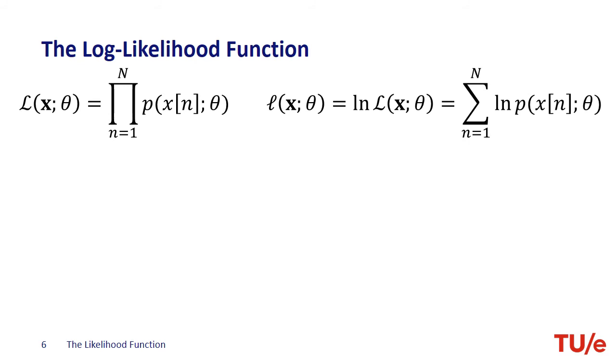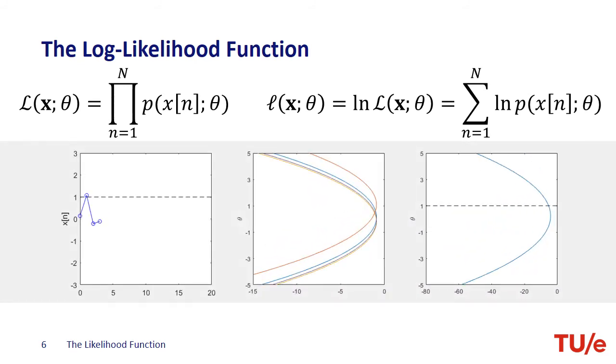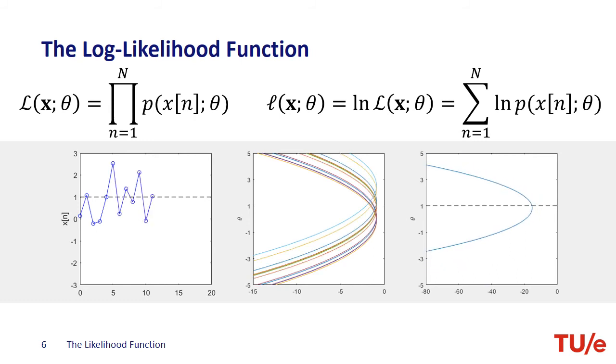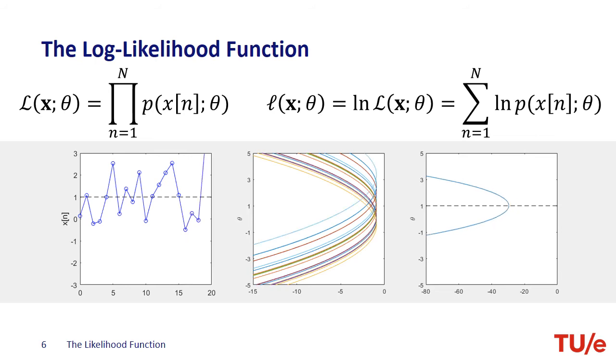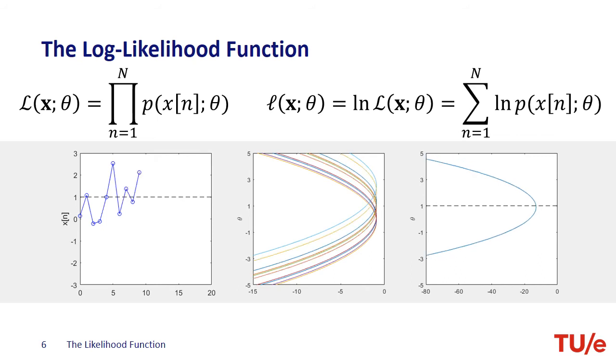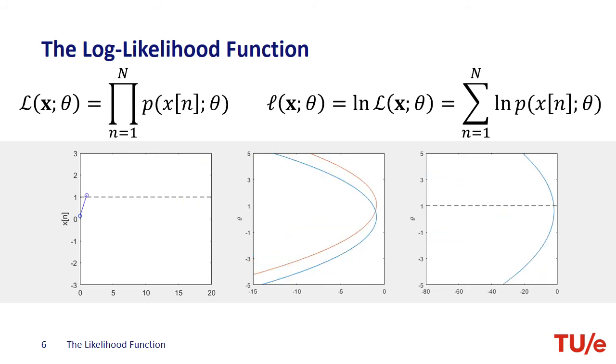Let's now focus on the animated figure on the slide. On the left-hand side, you see the data samples we collect. The data is generated by 1 volts DC plus white Gaussian noise with 0 mean and variance sigma squared equal to 1. In the middle, we have the log likelihood functions for each individual sample.